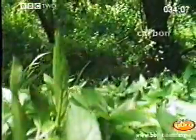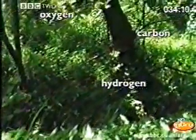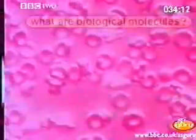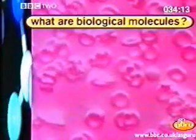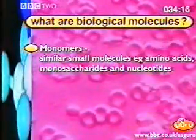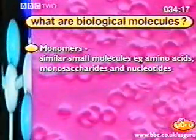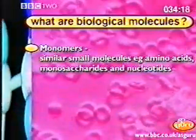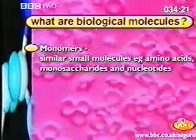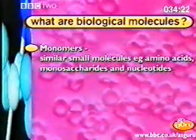Biological molecules are based on a very small number of elements, the most important being carbon, hydrogen, oxygen and nitrogen. These elements link up to build similar small molecules called monomers. There are three important biological monomers: amino acids, monosaccharides and nucleotides.